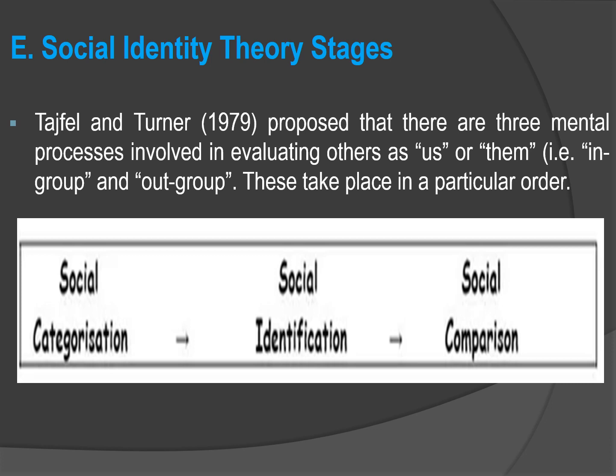Next we have the social identity theory stages. Tajfel and Turner (1979) proposed that there are three mental processes involved in evaluating others as 'us' or 'them' — in-group and out-group. These take place in a particular order: first is social categorization, then social identification, and finally social comparison.